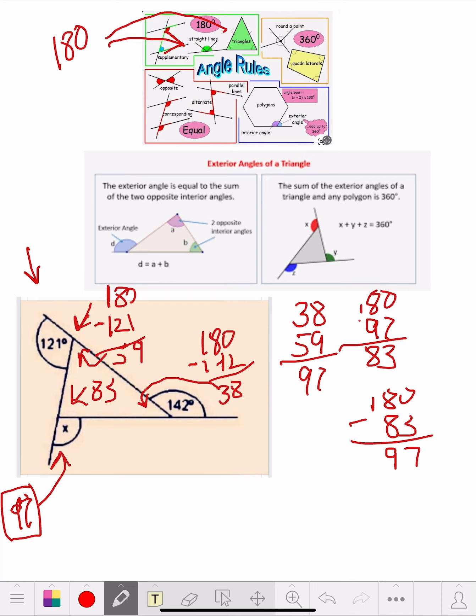We started covering exterior angles last week. So that actually said, like two inside angles equals the outside or the exterior of the outside. But there's another one right here. The sum of the exterior angles of a triangle in any polygon is 360.